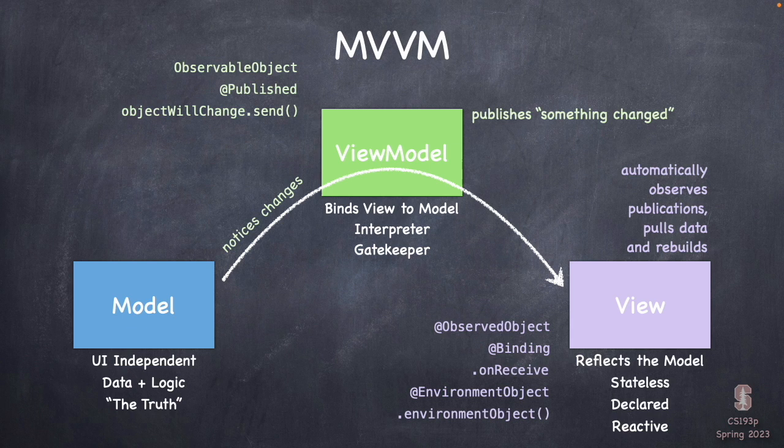I'm putting things on the slide — like view modifiers and @State things — but they're different and just for future reference. I won't talk about them right now, but later in the quarter when you see them, you can refer back to the MVVM slide. We'll be talking about ObservedObject, ObservableObject, and @Published in the next lecture or so.